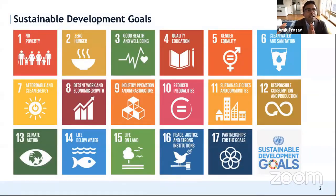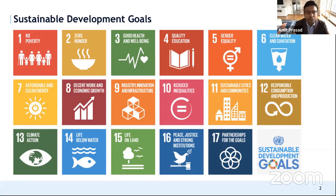We are now nearly five years into the SDG-defined period of 2016 to 2030. There are 17 goals and they range from poverty, hunger, and health to partnerships, peace, and life on land and life below water. So it's a wide range of issues that we cover. There are 17 goals with a goal on health, which is the third goal: ensuring healthy lives and well-being.